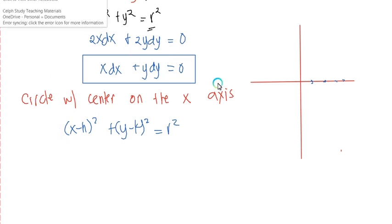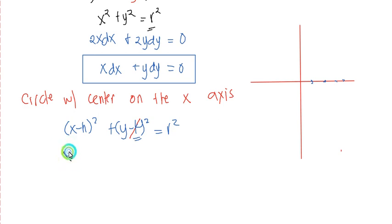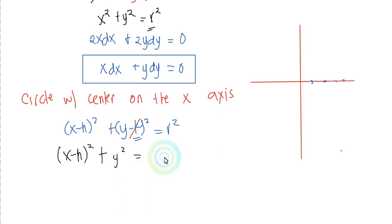Since the center lies on the x-axis, the y-coordinate of the center is equal to zero. Therefore k equals zero, and our equation becomes x minus h squared plus y squared equals r squared.